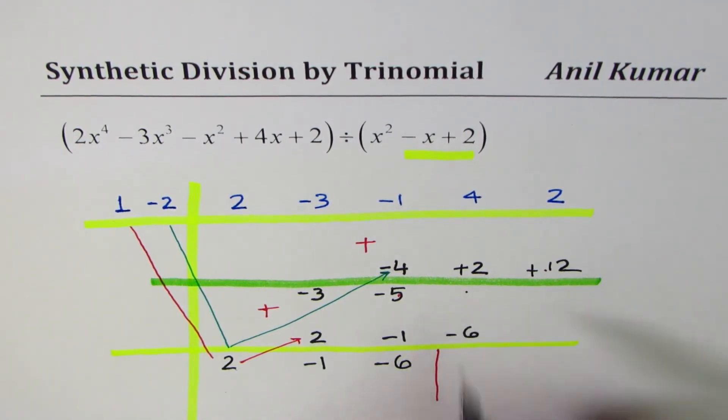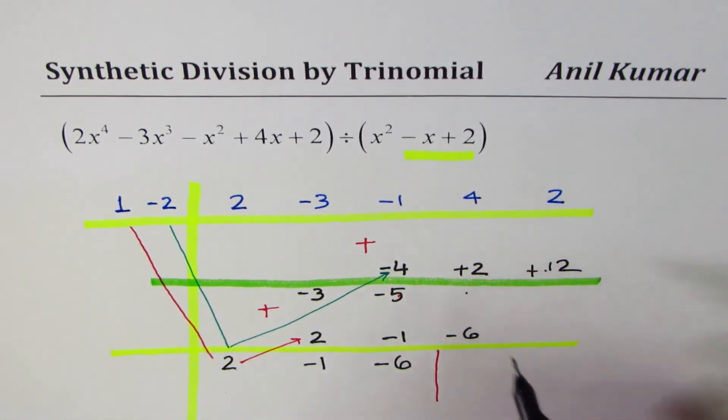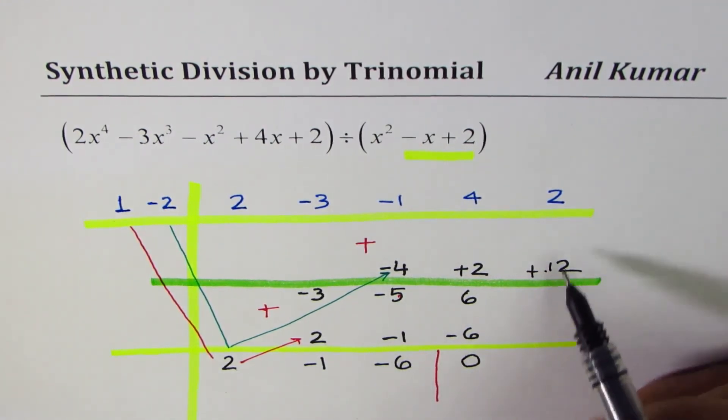We have to add these two terms. 4 plus 2 is 6, and when you add 6 with minus 6, you get 0. What do you get here when you add 2 to 12? You get 14. So that's the remainder part.